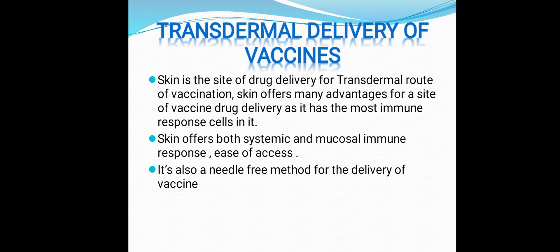Next is transdermal delivery of vaccines. The transdermal route occurs through the skin, which offers many advantages as a safe site for vaccine delivery — it contains the most immune cells. Skin offers both systemic and mucosal immune response and is easily accessible. It is also a needle-free method for vaccine delivery.